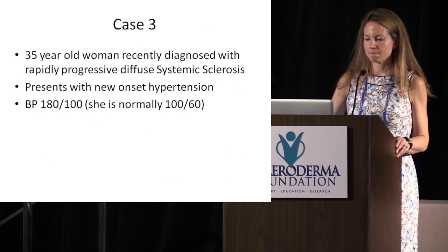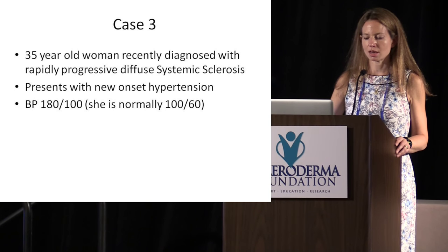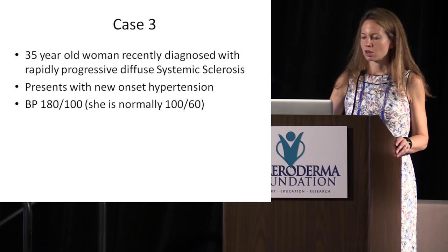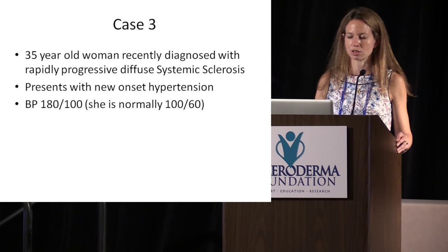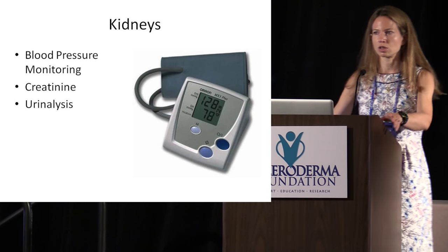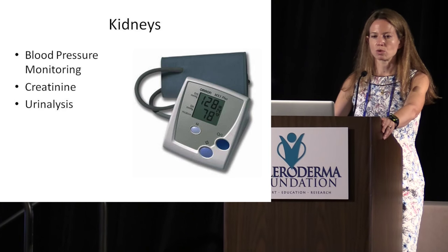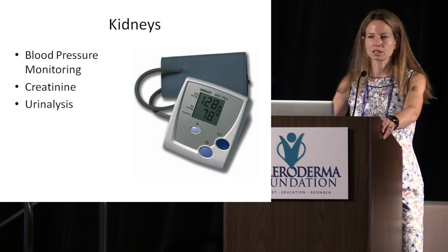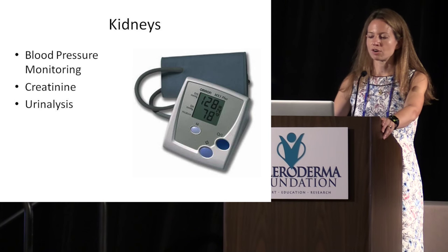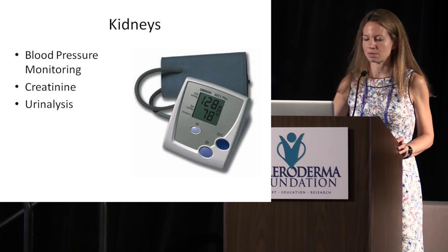Case three is a 35-year-old woman recently diagnosed with rapidly progressive diffuse scleroderma who presents with new onset high blood pressure — 180 over 100 — when she's normally 100 over 60. That would be a very, very big increase. In a case like this, we're concerned about renal involvement in scleroderma. This patient was at particular risk for this complication because of her very rapidly and recently diagnosed, rapidly progressive systemic sclerosis.